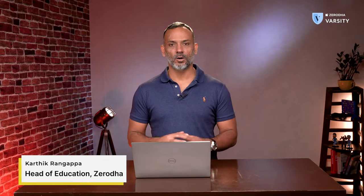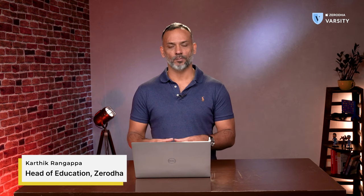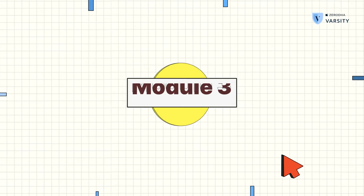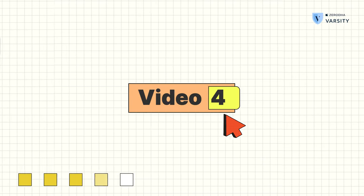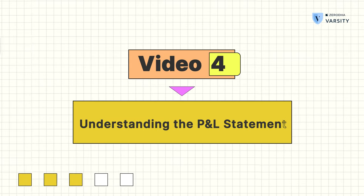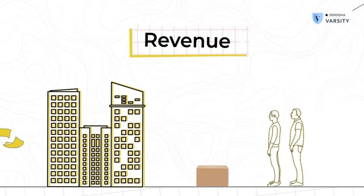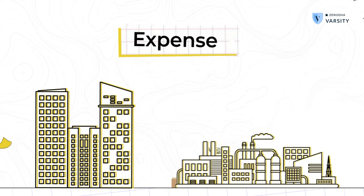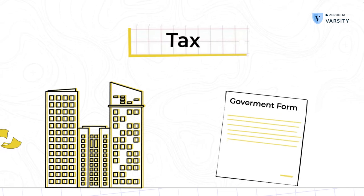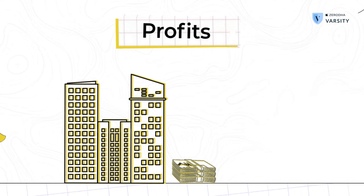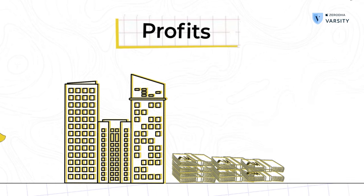In this video we'll try and understand how to read the consolidated profit and loss statement of a company. The profit and loss statement, or simply the P&L statement, is a representation of how much revenue the company recognized for the given financial year, what were the expenses during that year, what was the amount of tax that the company had to pay, and finally what was the profit that the company took home for that given financial year.